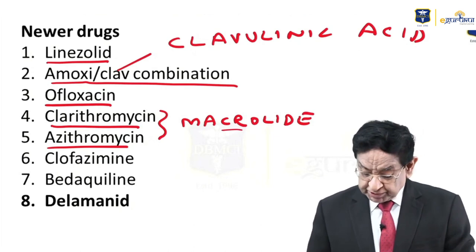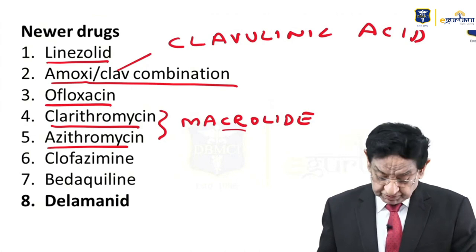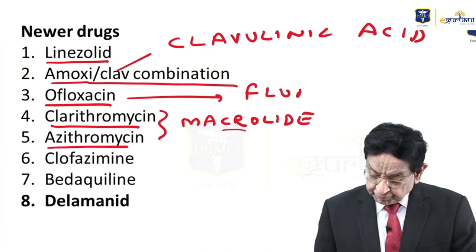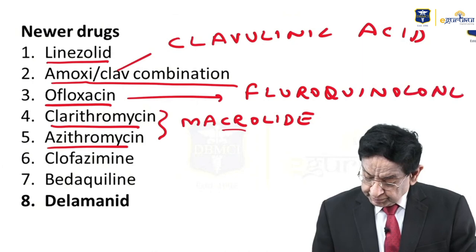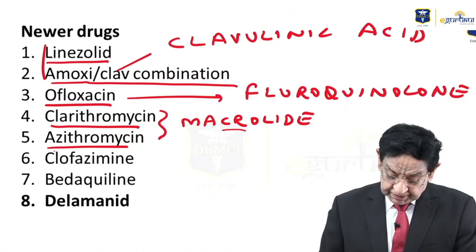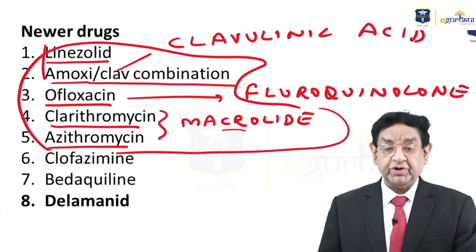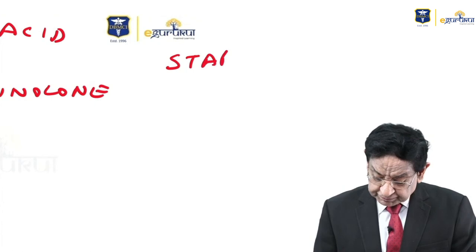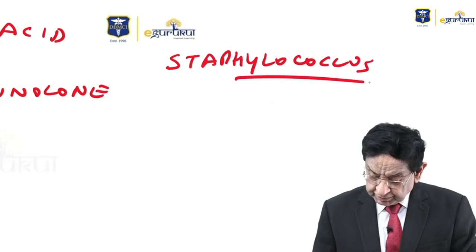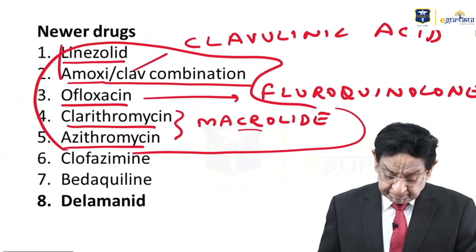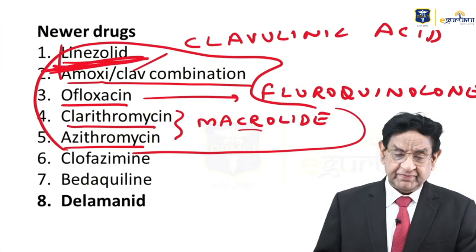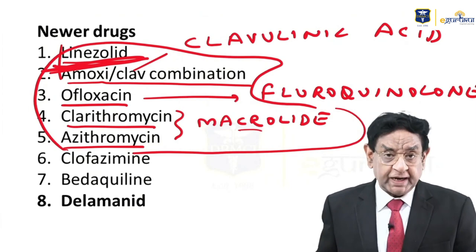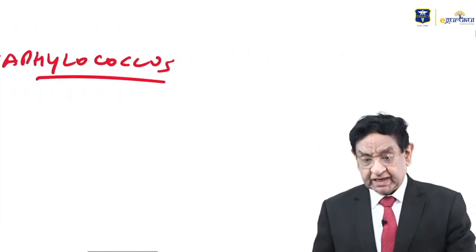Macrolides also include erythromycin, but in tuberculosis we use clarithromycin and azithromycin. Ofloxacin is a fluoroquinolone. Notably, if you recall your pharmacology, these newer TB drugs are primarily used for staphylococcal infections. Linezolid specifically is used for staphylococcal infection.